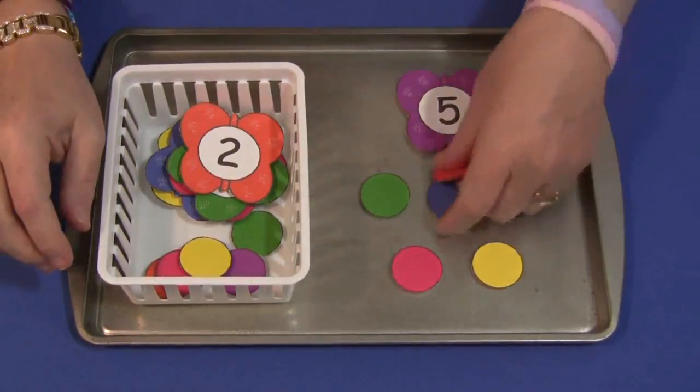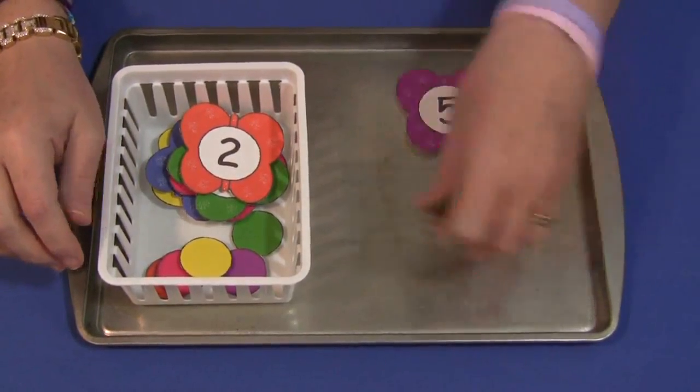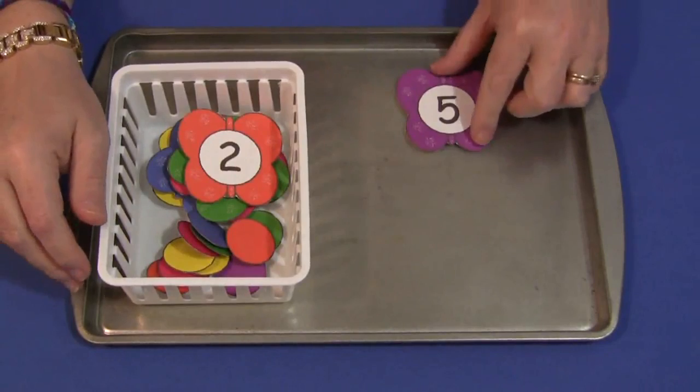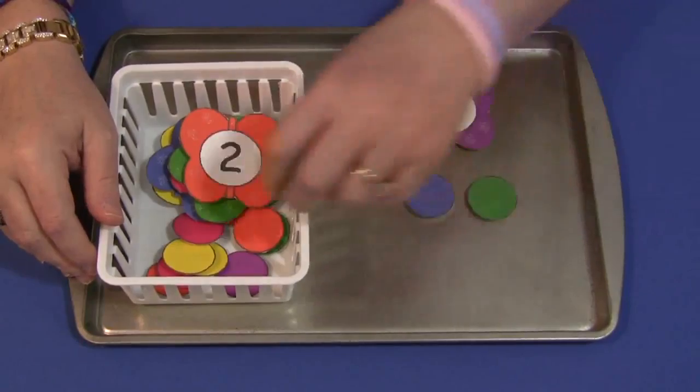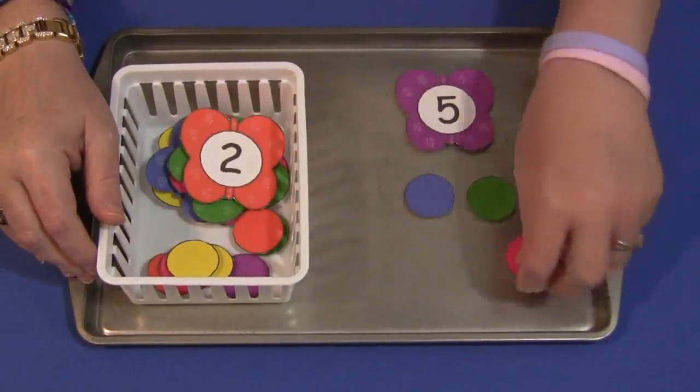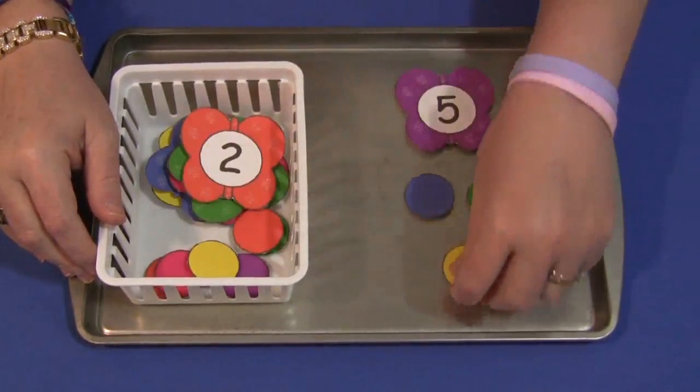What happens is a child will place a butterfly on the tray and then they will count out the same number of circles as there is on the butterfly.